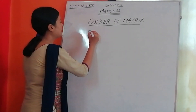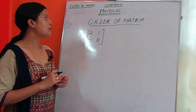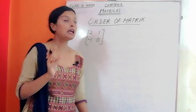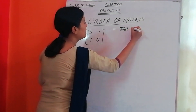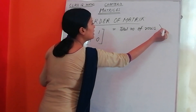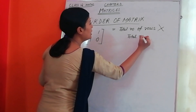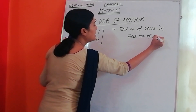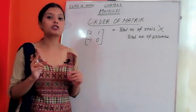Suppose I have a matrix with elements 2, 1, minus 1, 0. Here is my matrix. I will explain the order of this matrix. Order means the total number of rows by the total number of columns. You can use the multiplication symbol — we call it 'by' — so order is total number of rows by total number of columns.